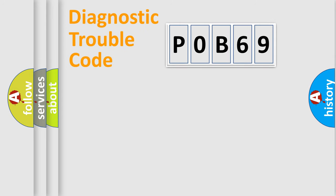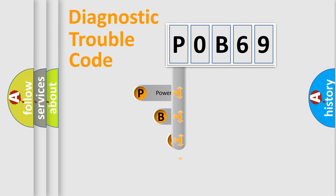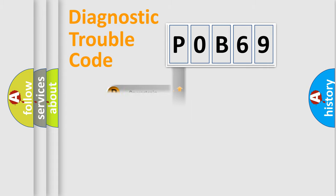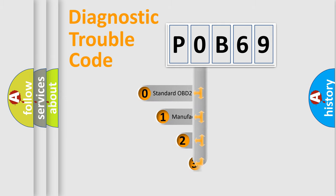Let's do this. First, let's look at the history of diagnostic fault code composition according to the OBD2 protocol, which is unified for all automakers since 2000. We divide the electric system of an automobile into four basic units: Powertrain, Body, Chassis, and Network. This distribution is defined in the first character of the code.